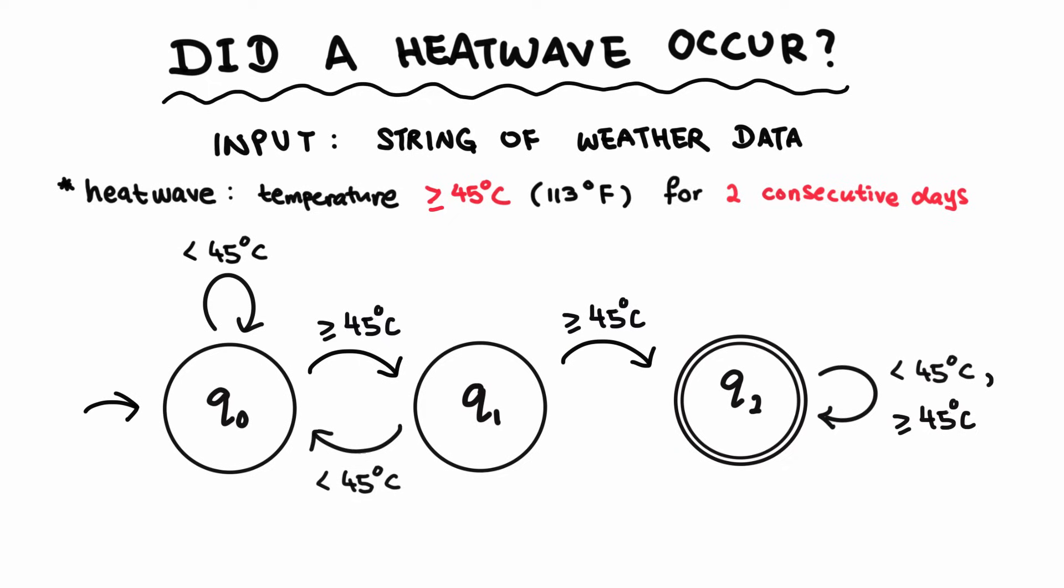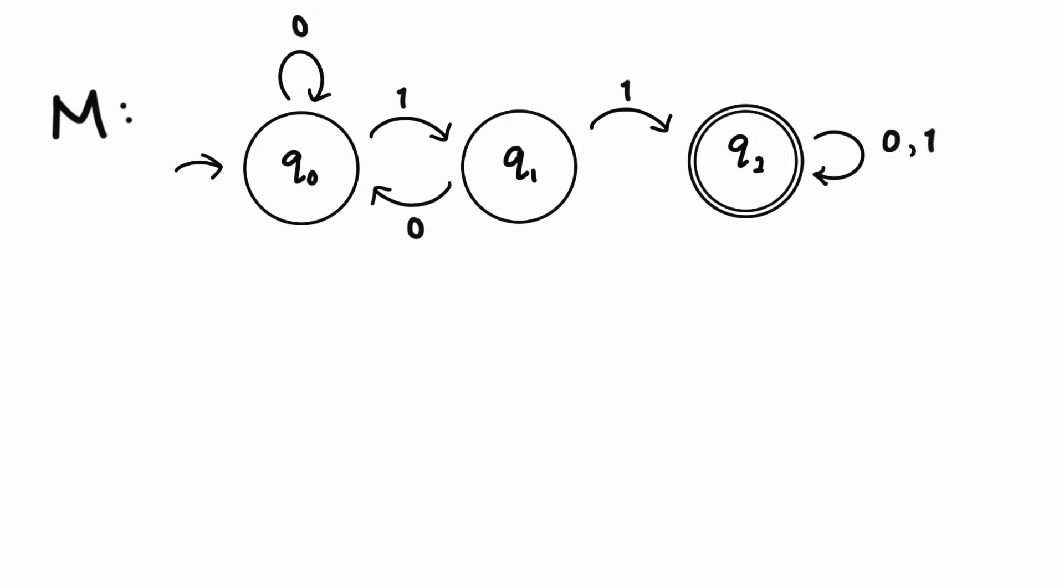And finally, we'll just modify our machine a little bit more. Now, let's use a 1 to represent a day with a temperature over 45 degrees, and we use 0 to represent a day with a temperature less than 45 degrees. And there we have it. Our finite automaton, which we will now call M, will tell us if a heatwave had occurred. Notice that the automaton will enter the accept state if it takes in any string containing two consecutive ones as input.